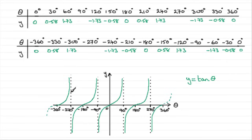It's also worth noting that this graph is periodic. Each one of these patterns repeats every 180 degrees. So it's periodic with a period of 180 degrees.